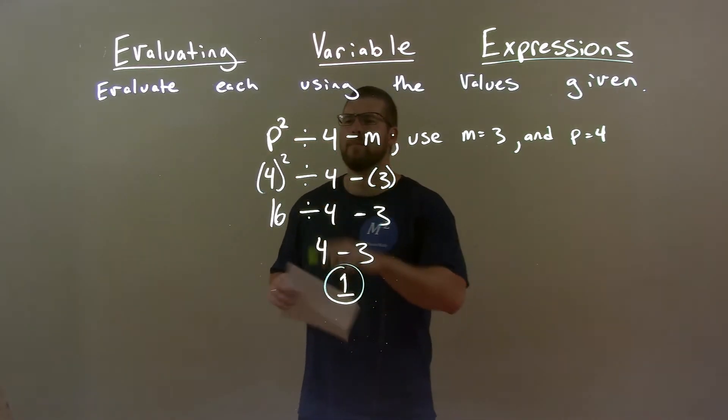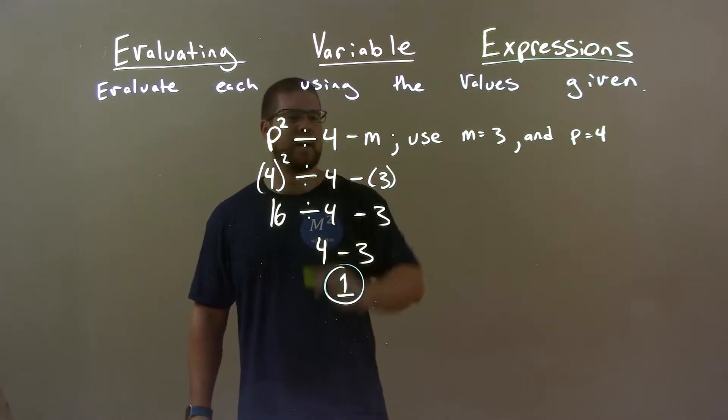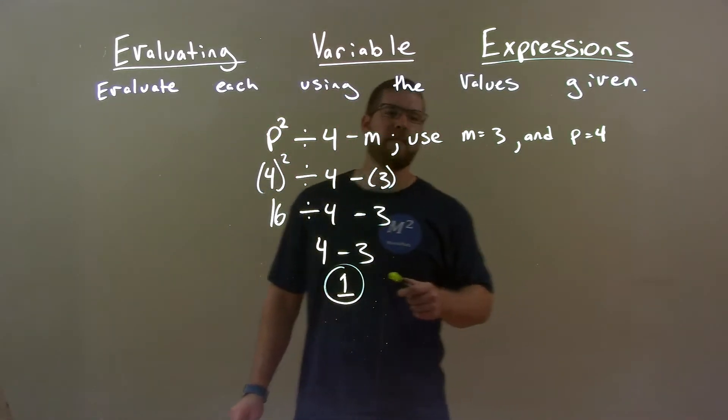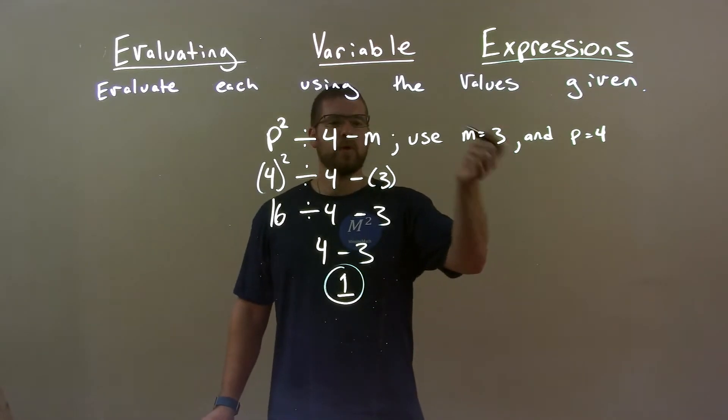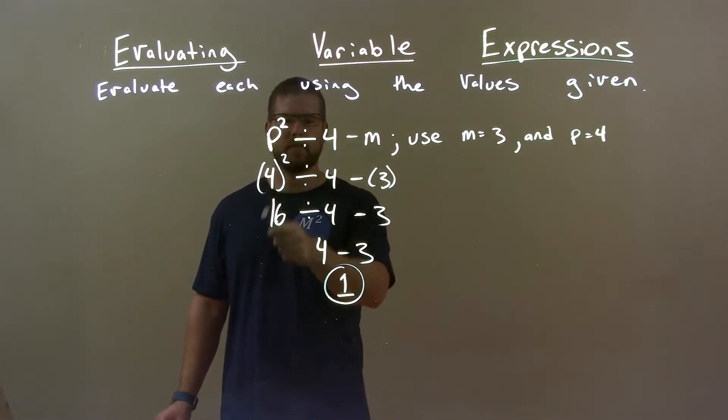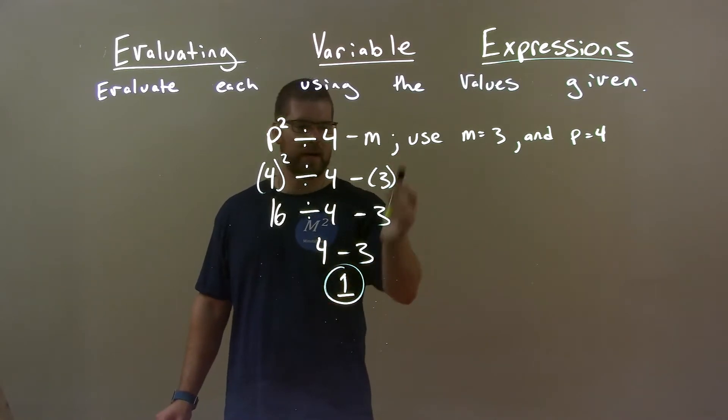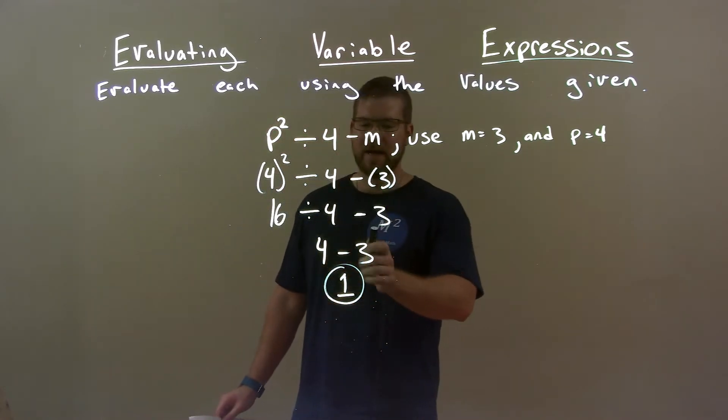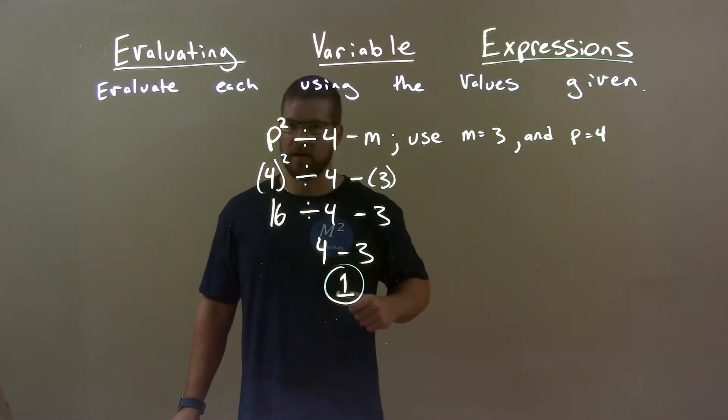Quick recap, we're giving p squared divided by 4 minus m. We're using m to be 3 and p to be 4, okay? 3 for m, 4 for p. Simplify. 4 squared is 16. Divided by 4 is 4. Bringing down 3 the whole way. 4 minus 3 is 1. So, again, 1 is our final answer.